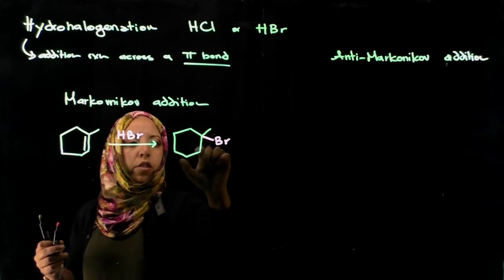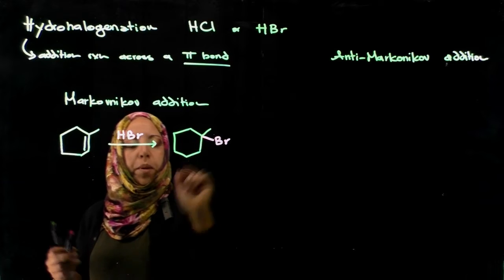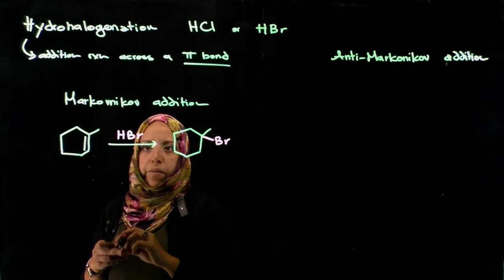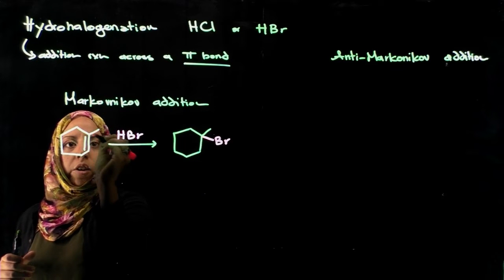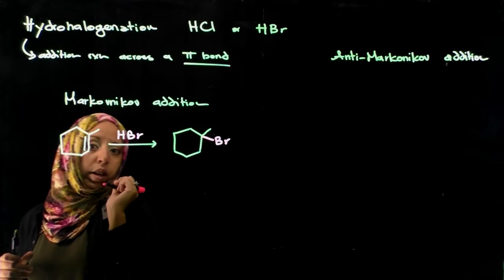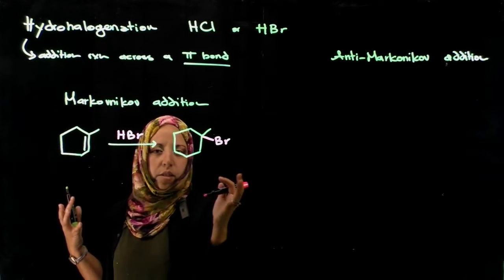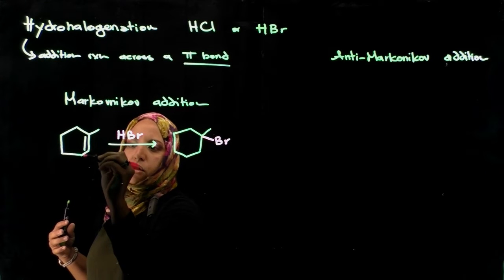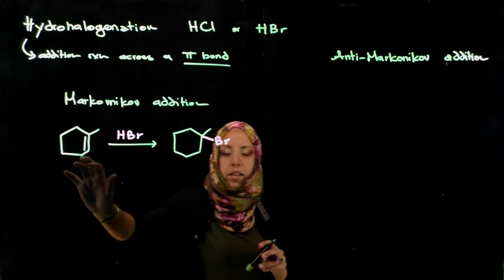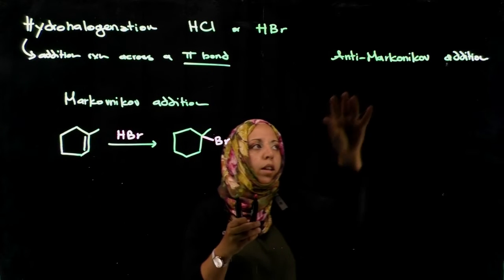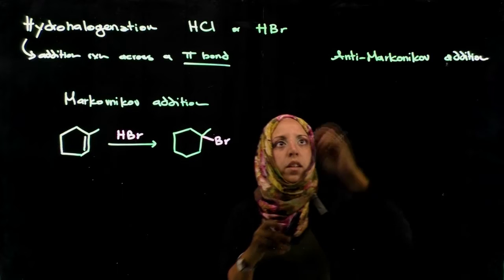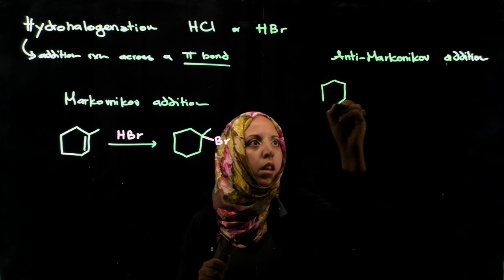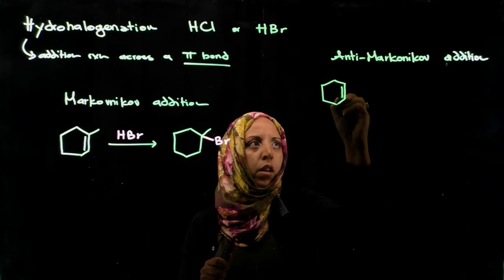It's easier to think about it in terms of the halogen because we actually draw it, whereas the hydrogen we don't draw in a line bond structure. This particular carbon has three groups attached to it, so it's tri-substituted. This particular carbon has two groups attached to it, so it's a di-substituted alkene. In an anti-Markovnikov addition, the halogen adds to the less substituted end of that carbon-carbon double bond.